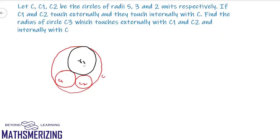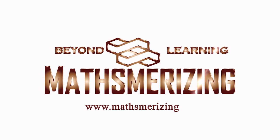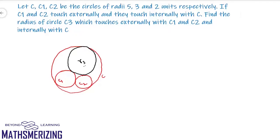Now we know that in this case, k1 will be positive, so it will be 1 upon r1, which is 1 by 3. k2 will be positive, so it will be 1 by r2, which will be 1 by 2, because they touch each other externally.